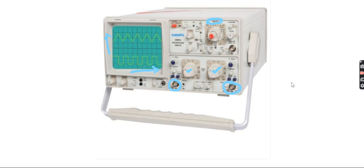Apart from that, there are some other switches and functions present for specific applications. There are also focus and intensity switches, available on almost all CROs, which are used to change the brightness and focus of the display. You can also shift the signal by changing the Y axis position — moving it up and down — and similarly the X position knob lets you move the signal along the X direction.